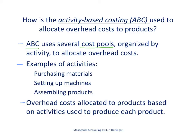Some examples of activities are purchasing of materials — we may have a purchasing department that takes care of the purchasing of materials needed for production — setting up machines in our production facility, or assembling products within our production facility. Overhead costs are allocated to products based on activities used to produce each product, so the more we use activities to produce a particular product, the more overhead costs get charged to that product.